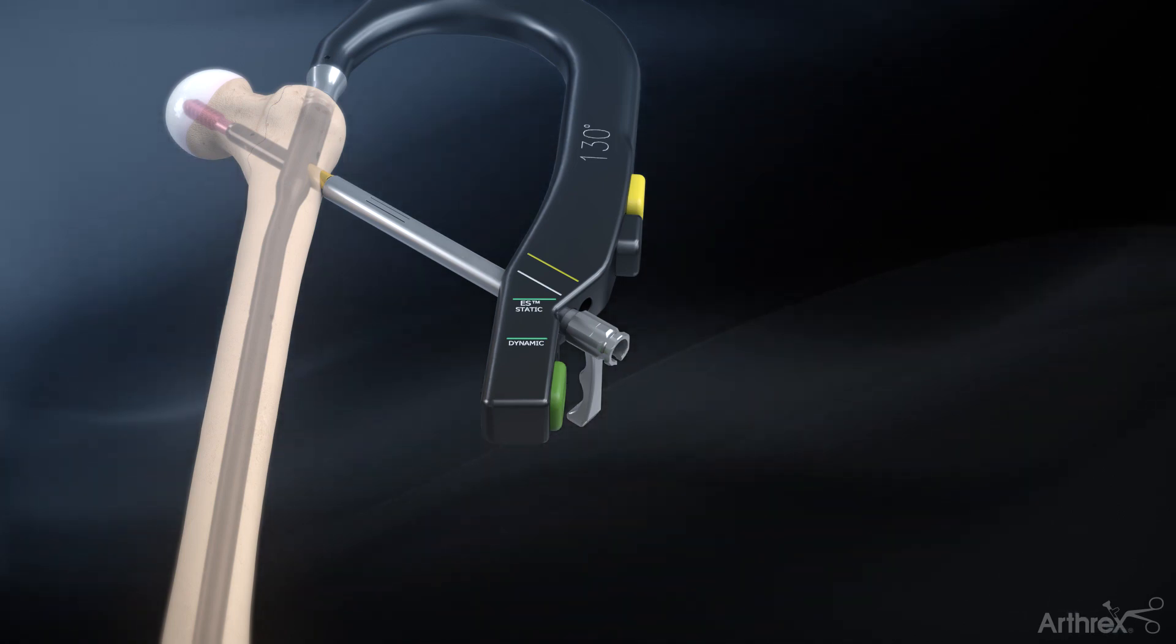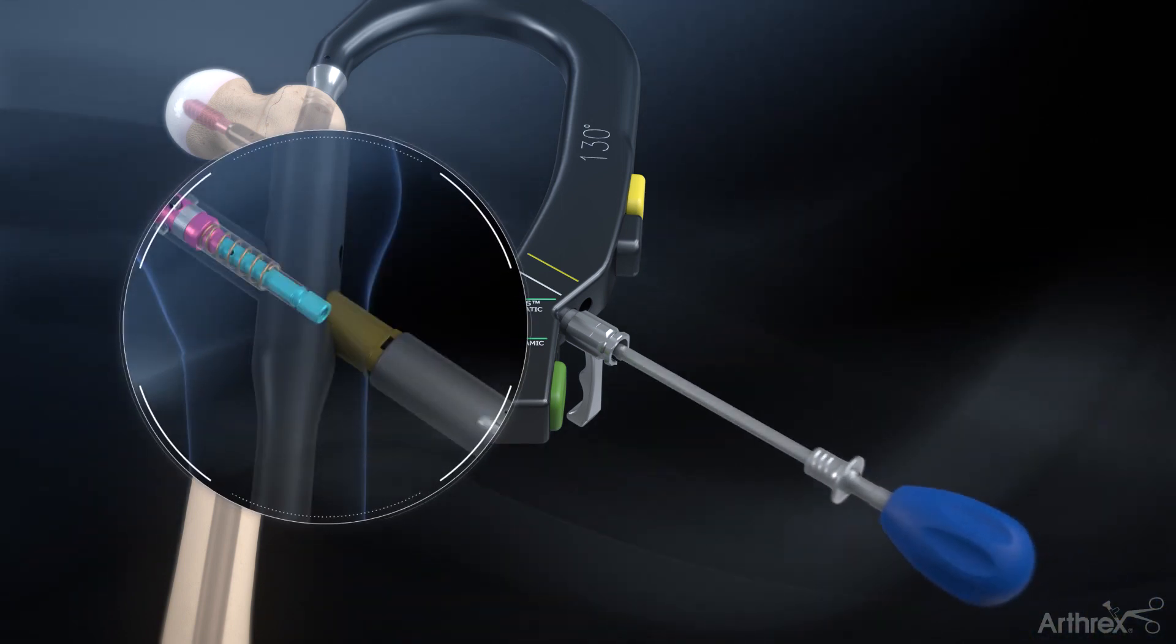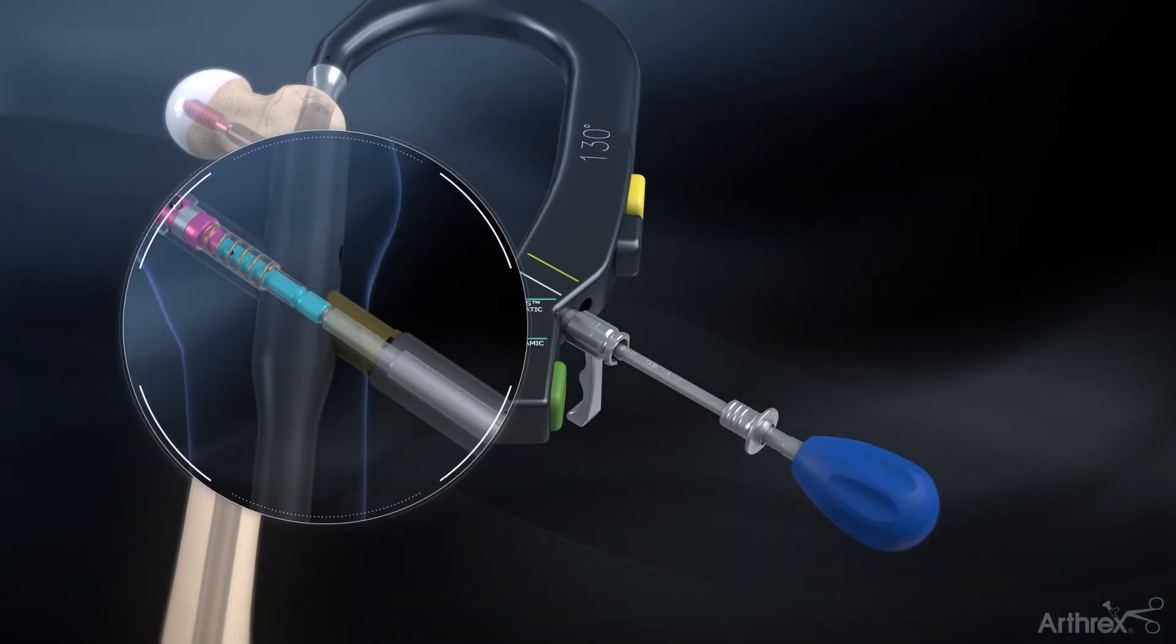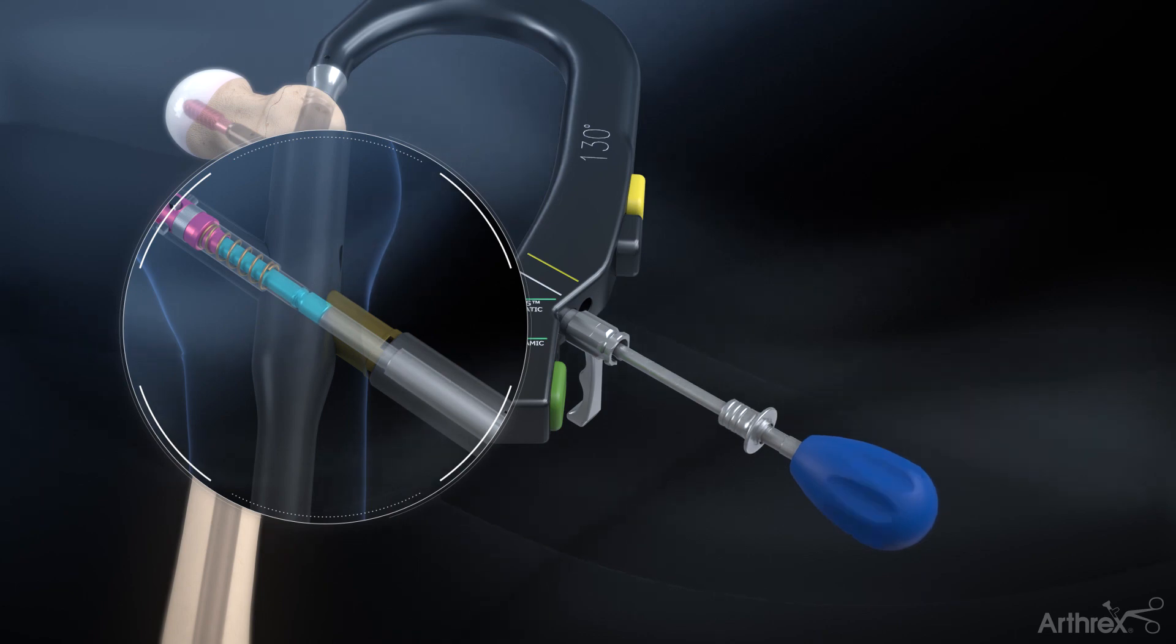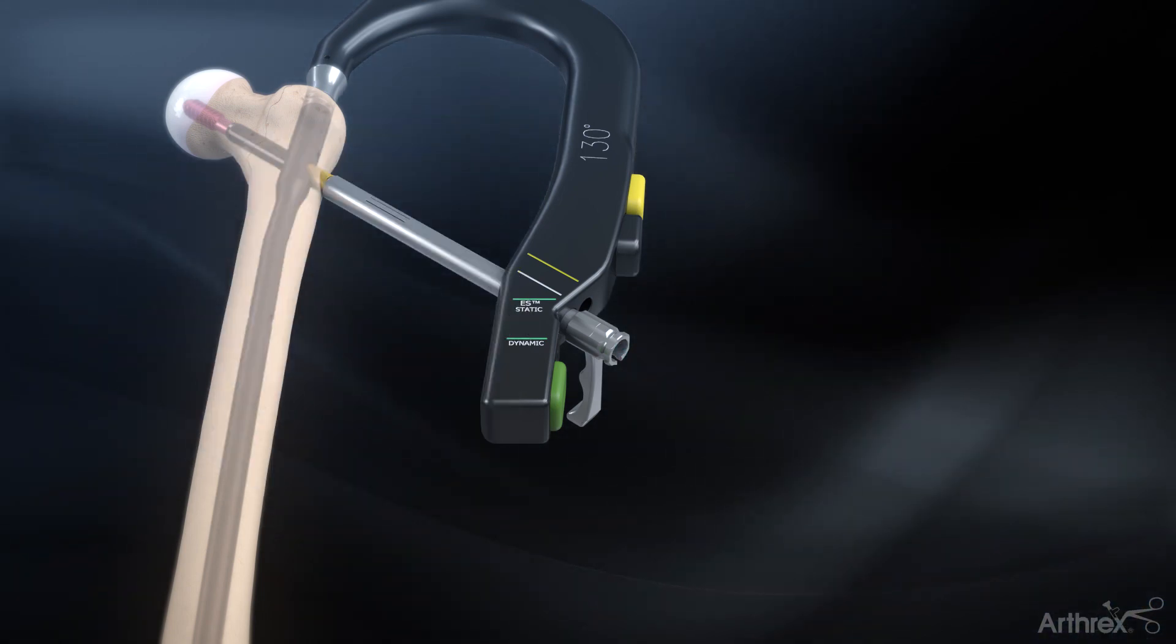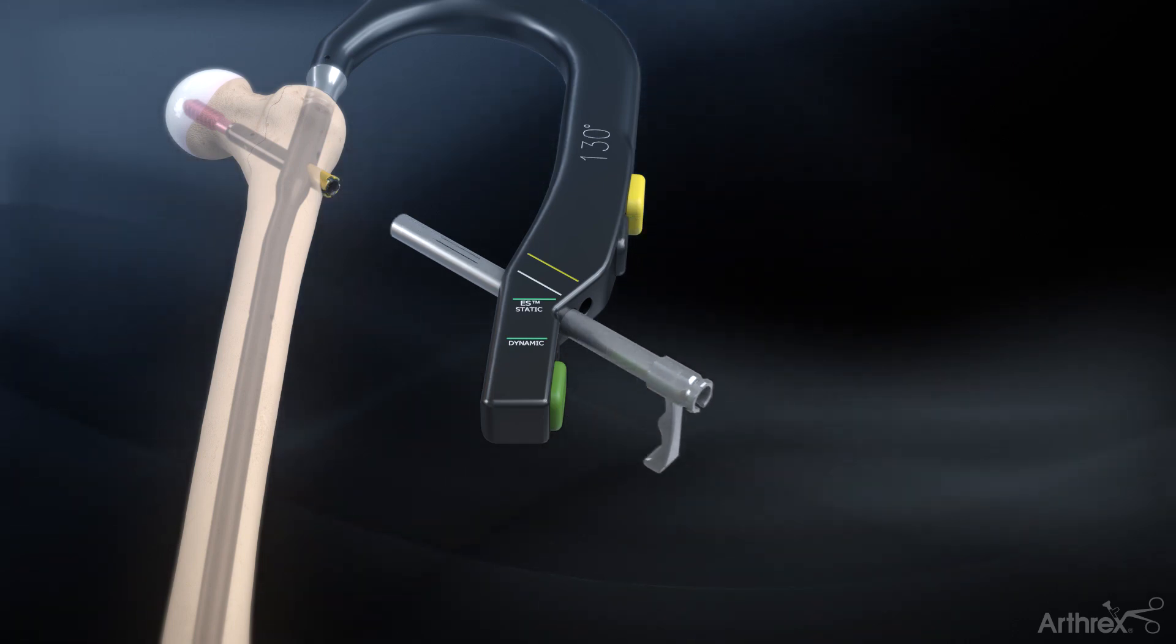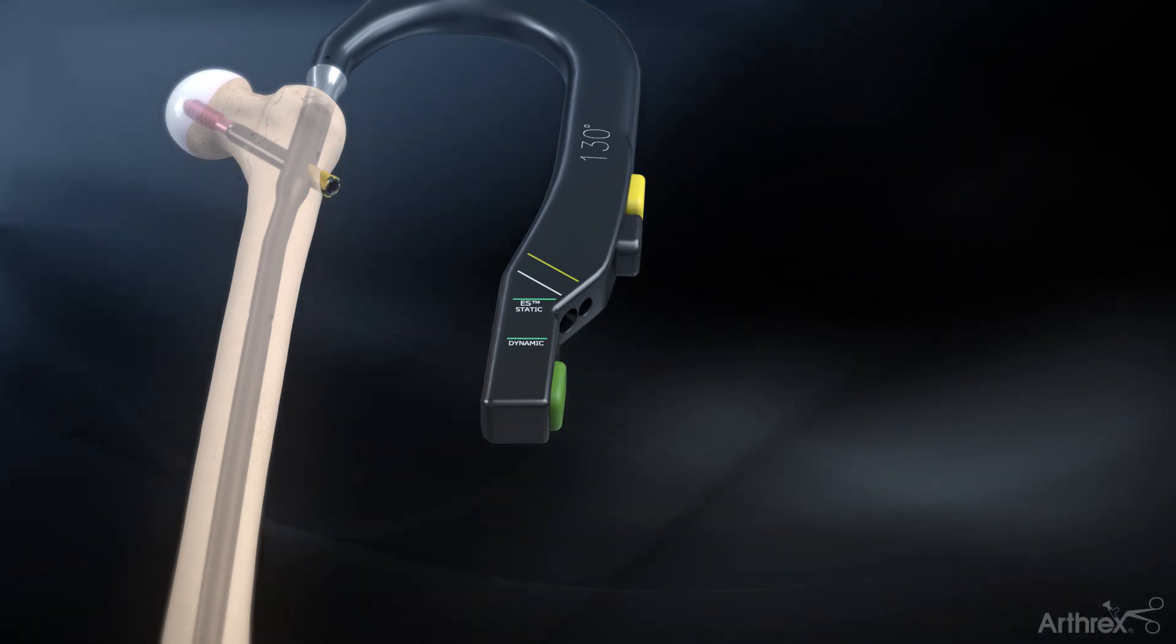To allow post-operative compression in the telescoping lag screw, remove the activation sleeve by inserting the activation tool through the sheath into the lag screw and turning counterclockwise. The activation sleeve will retain the tip of the activation tool once disengaged from the lag screw. Remove the lag screw sheath to complete the lag screw insertion.